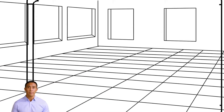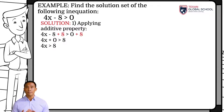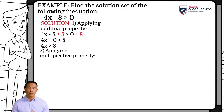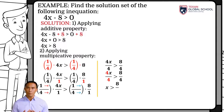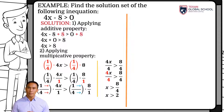In the following example, we will apply the additive property to isolate x, adding the additive inverse of negative 8, which is 8. We simplify, obtaining 4x greater than 8. We then apply the multiplicative property, multiplying by the multiplicative inverse of 4, which is one-fourth on both sides, so as not to alter the inequality. Since we multiply by a positive value, the inequality sign is not altered. Simplifying results that x is greater than 2. Again, we use set builder and interval notation to represent the solution set.